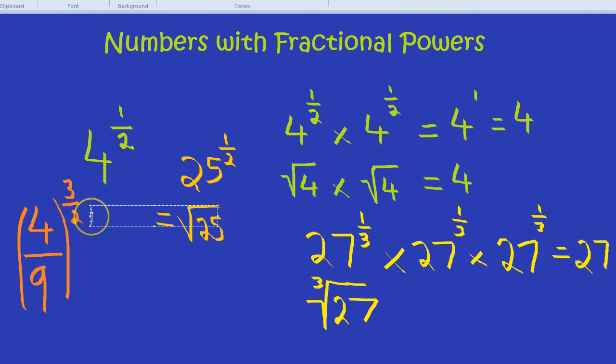Now you might want to write this down. But the bottom line, as we've seen, is always the root. The top line is, as usual, the power. 2 root, what does that mean? Well, that's going to be square root.